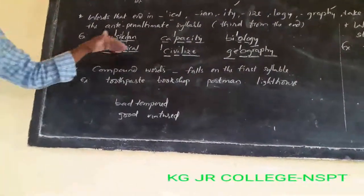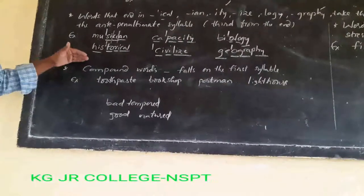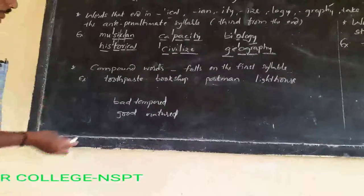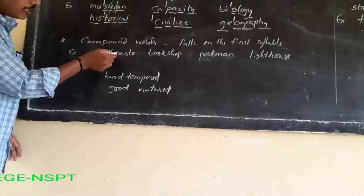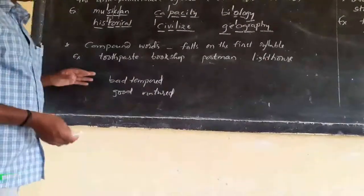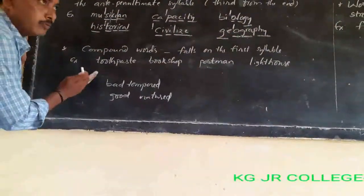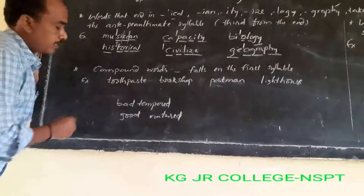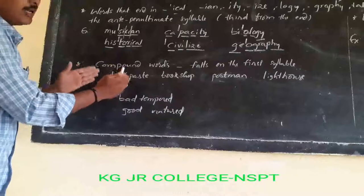Next rule: compound words. There are closed compound words, hyphenated compound words, and open compound words. If there is no hyphen and no space, it is a closed compound word. If there is a space between the two words, it is an open compound word. If a hyphen is used between the two words, it is a hyphenated compound word. For these compound words, the stress falls on the first syllable — especially in closed compound words. For example, 'toothpaste': tooth and paste are both known words. When they come together, they form a compound word representing a single meaning.